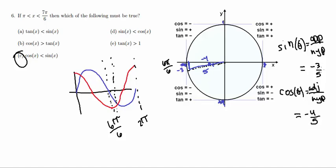So again, by looking at these two numbers, we see that sine of theta is greater than cosine of theta. Or answer choice C.